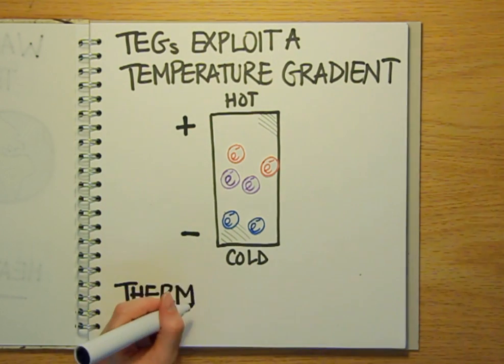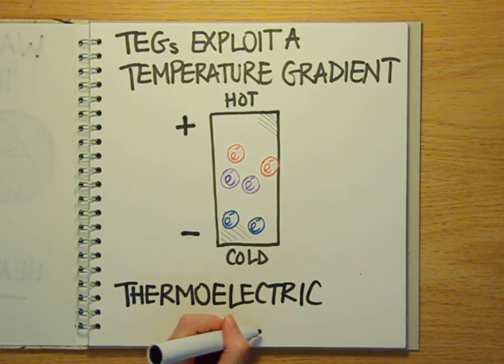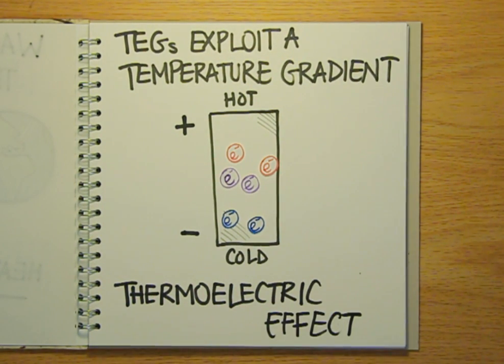This phenomenon, where a temperature difference can create a voltage, is known as the thermoelectric effect, and it was first described as long ago as the 1820s by a German physicist called Thomas Johann Seebeck.